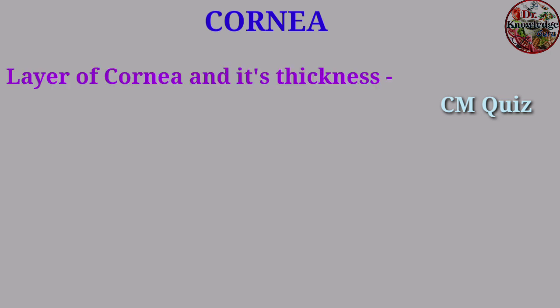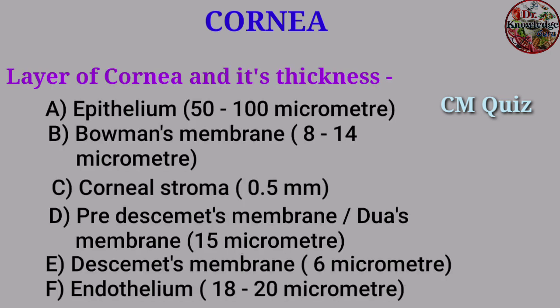Cornea layers and their thickness: A. Epithelium, 50–100 micrometers. B. Bowman's membrane, 8–14 micrometers. C. Corneal stroma, 0.5 mm. D. Pre-Descemet's membrane (Dua's membrane), 15 micrometers. E. Descemet's membrane, 6 micrometers. F. Endothelium, 18–20 micrometers.